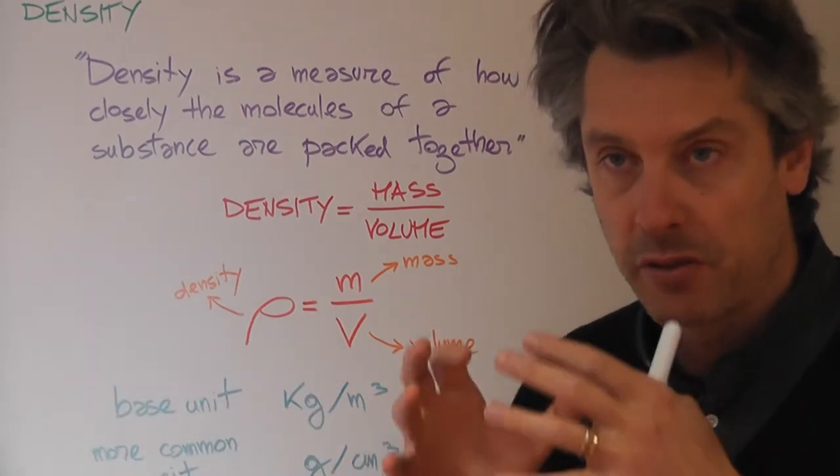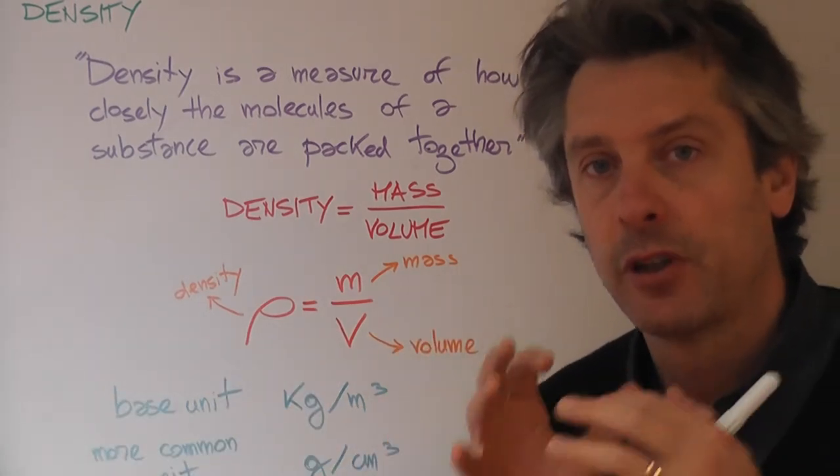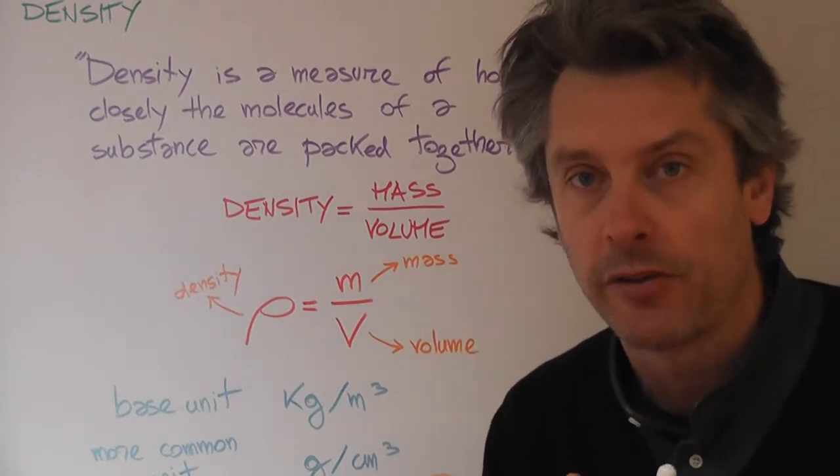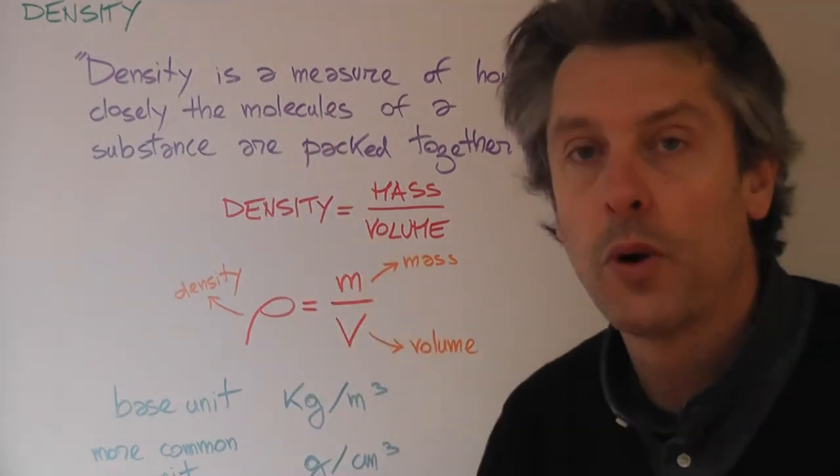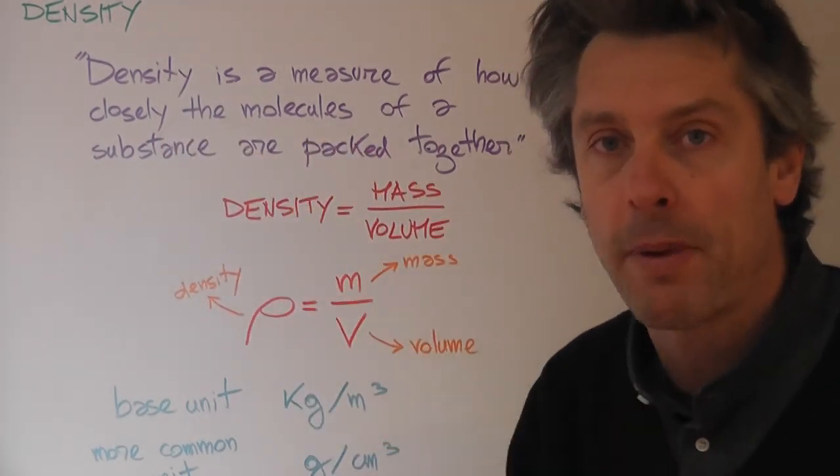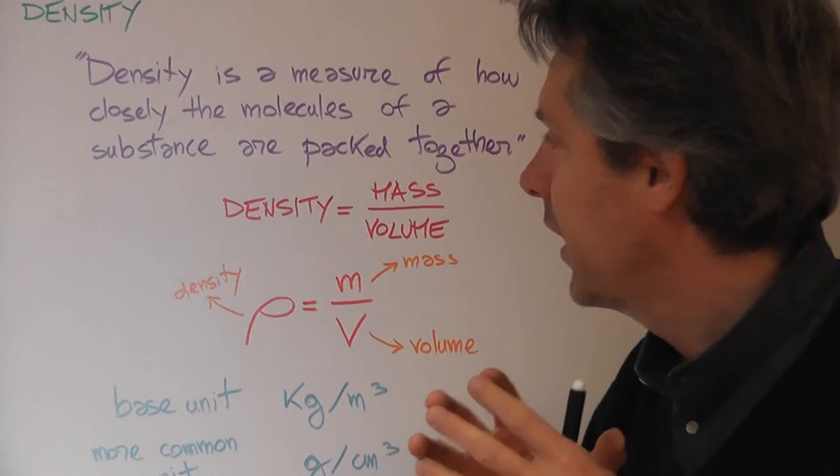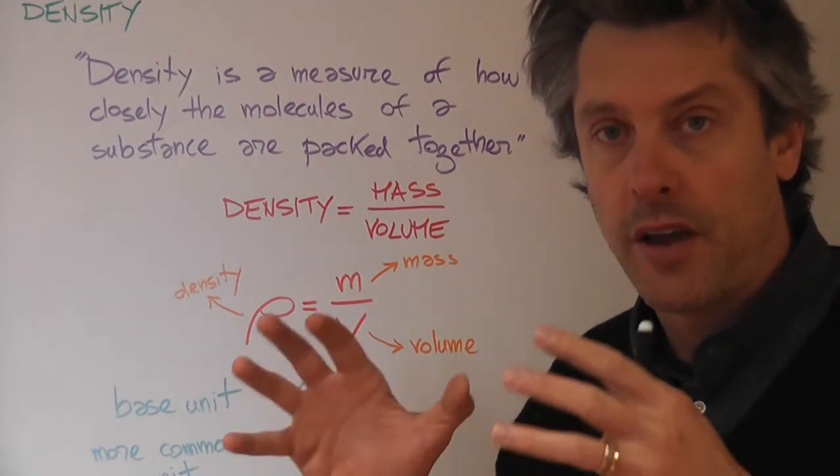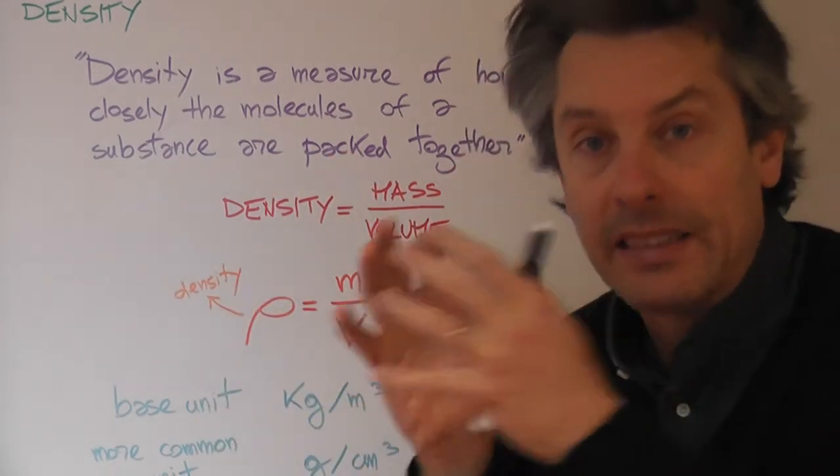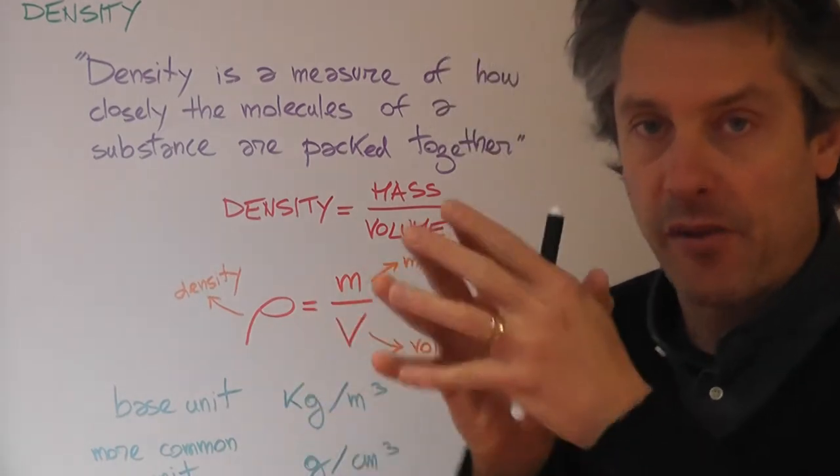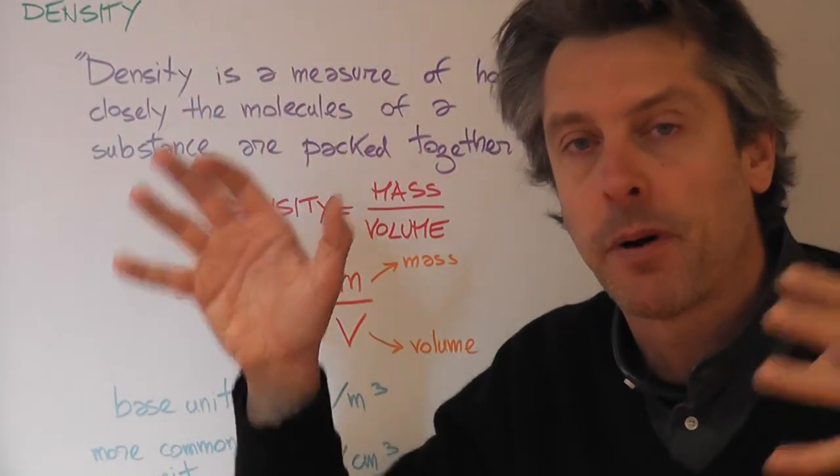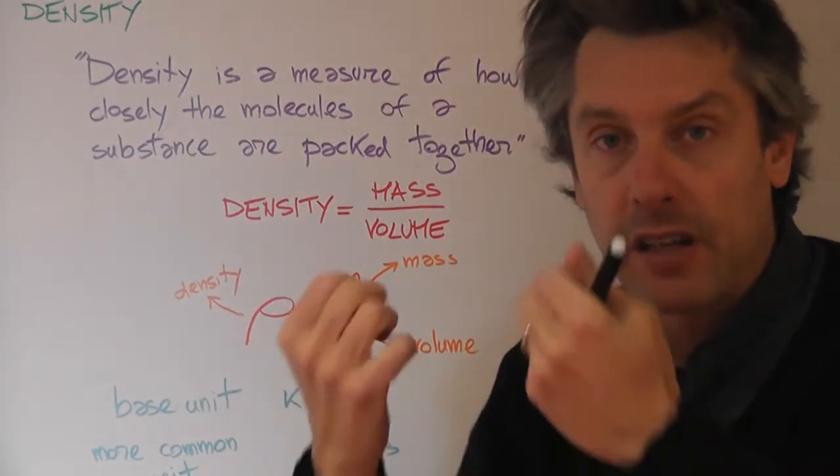Now we have to combine these two things together. If you look from the point of view of the constituents of what these substances are made of, namely molecules, we define density as how closely these molecules are packed together in a substance. If the molecules are more close together, that will be a dense object. On the other hand, if the molecules are more loosely connected, very much spaced apart, that object will have a low density.